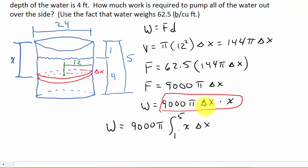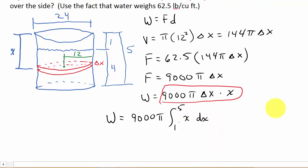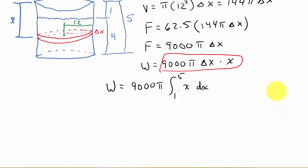And the delta x, well, we can write delta x as dx. Alright, so now we just integrate. So that's going to give us 9000 pi times one half x squared, and that's from 1 to 5.